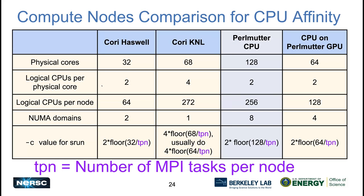Before moving on to GPU affinity examples, here's a quick recap of how to set the number of CPUs per task. On the Perlmutter CPU nodes we have 128 physical cores; on GPU nodes we have half that — 64. To set the -c flag (CPUs per task), use this formula: take 64 hardware cores, divide by the number of MPI tasks per node, floor the result, then multiply by 2. For example, with 64 tasks per node, floor(64/64) = 1, times 2 = 2 CPUs per task.